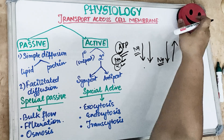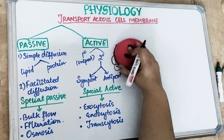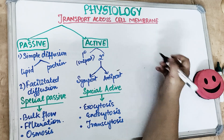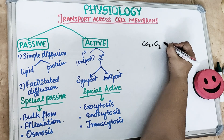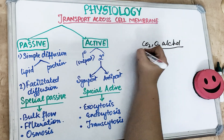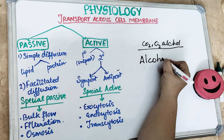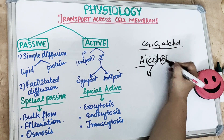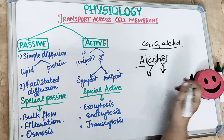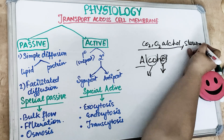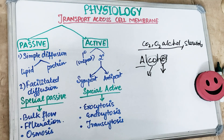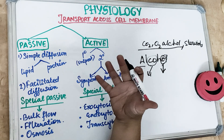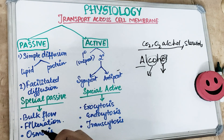Simple diffusion involves fat-soluble, lipid-soluble molecules: carbon dioxide, oxygen, and alcohol - you can remember it as ALCOHOL itself (AL = alcohol, CO = carbon dioxide, O = oxygen). Steroids are also transported through simple diffusion through the lipid layer.